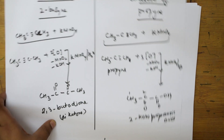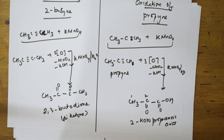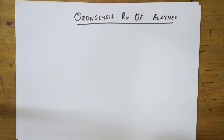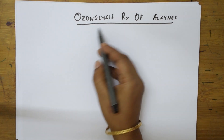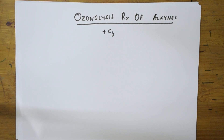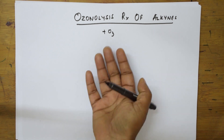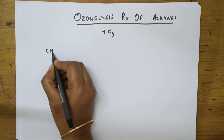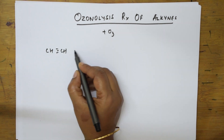Let us now look at ozonolysis reactions of alkynes. Welcome back students to the next type of oxidation reaction — ozonolysis. Ozonolysis is nothing but addition of an ozone molecule. In the alkene chapter I have taught you the mechanism of ozonolysis — please go through that video, as understanding the mechanism will give you a clear idea of the products formed. Here I will write the reaction directly for alkynes.